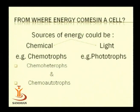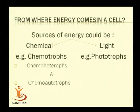From where does energy come within a cell? The sources of energy for a bacterial cell could be a chemical compound. Microorganisms that derive energy from chemical substrates by using chemicals as oxidizable substrates are broadly known as chemotrophs, and those which derive their energy from sunlight are broadly known as phototrophs.